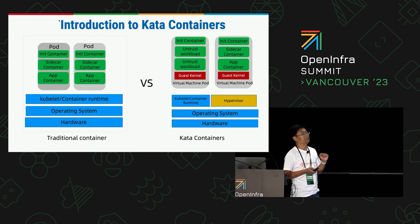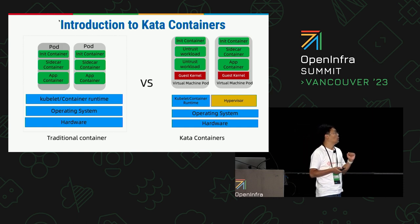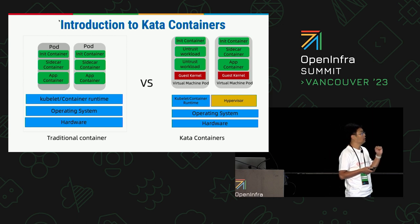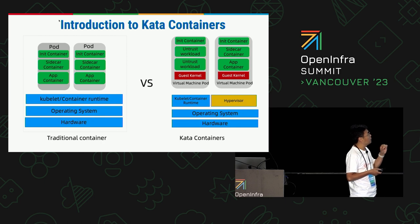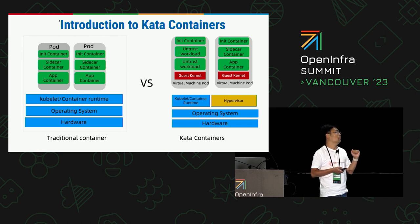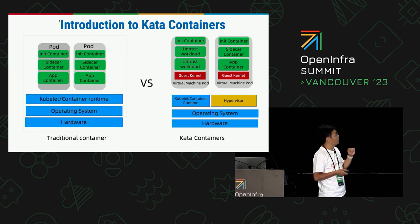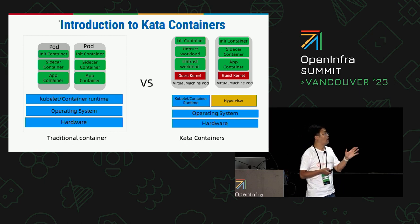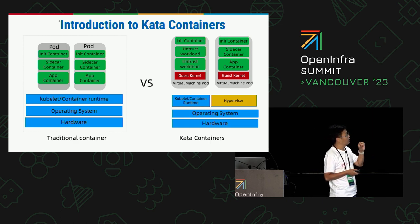So Kata containers will use a VM to reduce those influences between workloads. We put the workloads inside a VM, so the workloads use their own VM kernel and don't share the same kernel as the node. So even some untrusted workloads that cause crashes, OOM events, or other critical issues won't influence their neighbors. The big difference between Kata containers and traditional containers is that Kata containers can embrace untrusted workloads.